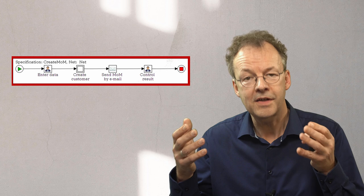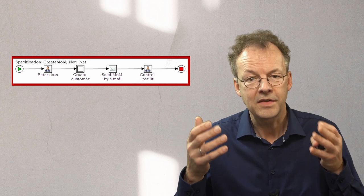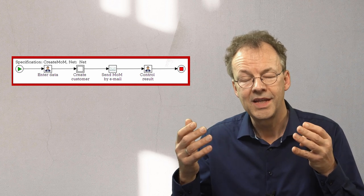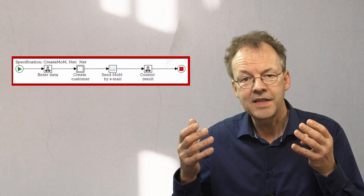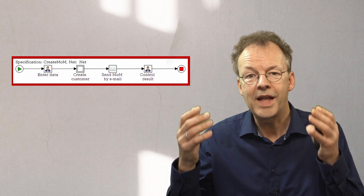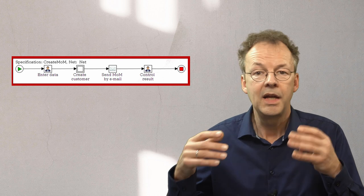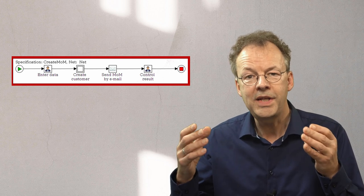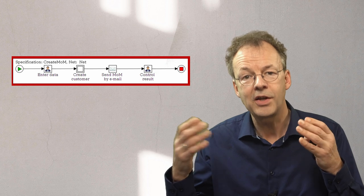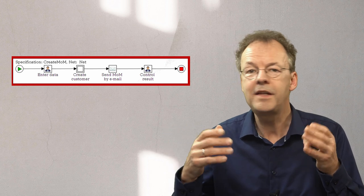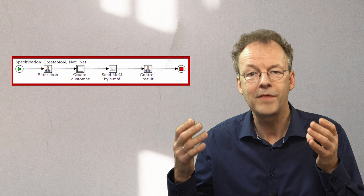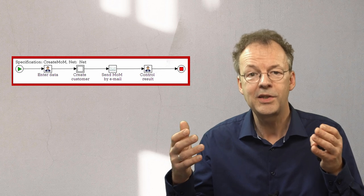Then we create the customer in the customer relationship management system. This is a complex task, which means we'll have a sub-workflow for this—we'll come to that in a minute. Then we send out the meeting minutes by email automatically. Finally, there's a human task to verify everything was executed correctly.